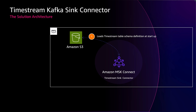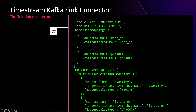It uses the same format that we support in the Timestream batch load feature. The schema definition maps Kafka messages to a record in a Timestream table. At a high level, each record contains an array of dimensions and measures, in addition to the timestamp of when it was collected and the timestamp unit which represents the granularity of the timestamp. Dimensions represent the metadata attributes of a time series data point such as user ID or product code. Measures represent the actual value being measured, such as quantity of the purchased item, IP address of the user, and more.